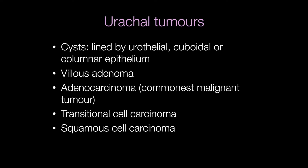There are a number of different types of urachal tumour. There may be cysts lined by urothelial, cuboidal, or columnar epithelium. Other urachal tumours include villus adenomas, adenocarcinomas, transitional cell carcinomas, and squamous cell carcinomas.